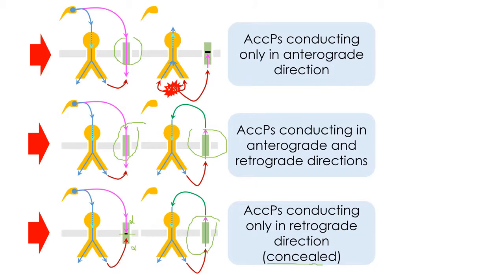However, they develop atrioventricular reciprocating tachycardias that utilize the accessory pathway as the retrograde limb of the reentry circuit, and the normal AV node, His pathway, as the anterograde arm of the reentry pathway.